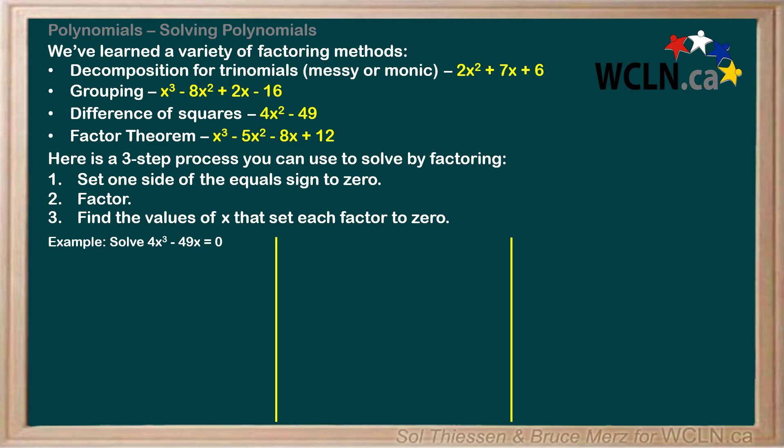Let's apply this to a few examples and touch on some key points. Here's our first example. Solve 4x³ - 49x = 0. Step 1 is to set one side of the equal sign to 0, which is already done for us.